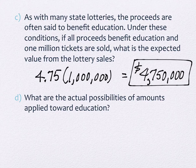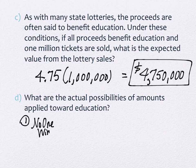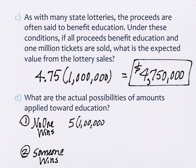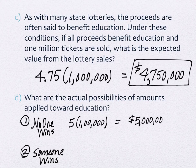Under these conditions if the proceeds benefit education and one million tickets are sold, what is the expected value from the lottery sales? On average we expect that every ticket sold has an expected benefit to the state of four dollars and 75 cents. So we're expecting as the state 4.75 and we're going to sell one million tickets. So we would end up with 4 million 750 thousand dollars.